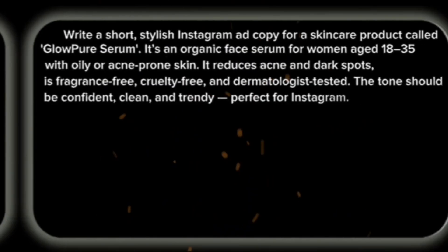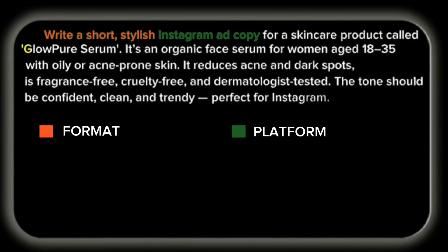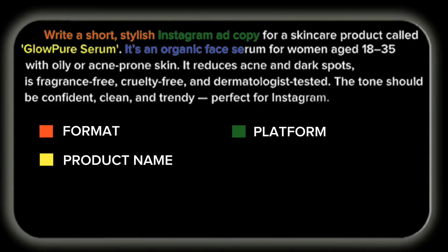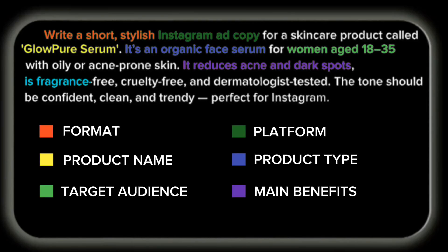In the prompt, I wrote: 'Write a short, stylish Instagram ad copy' — that's the format and platform. 'For a skincare product called Glow Pure Serum' — that's the product name. 'It's an organic face serum' — that's the product type. 'Designed for women aged 18 to 35 with oily or acne-prone skin' — that's the target audience. 'The serum reduces acne and dark spots' — those are the main benefits. 'It is fragrance-free, cruelty-free, and dermatologist-tested' — those are the special features.